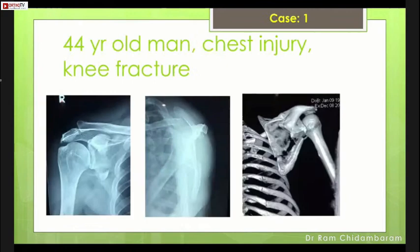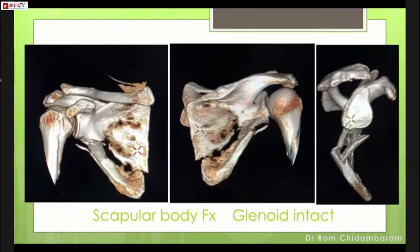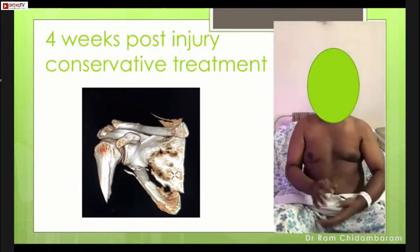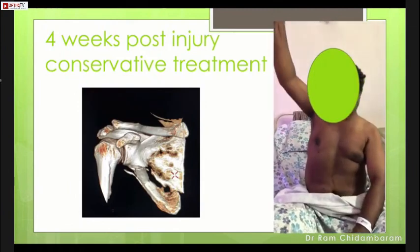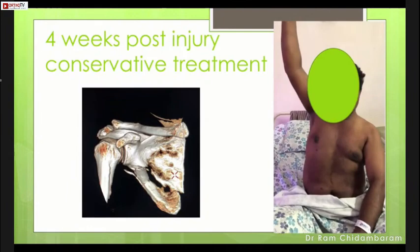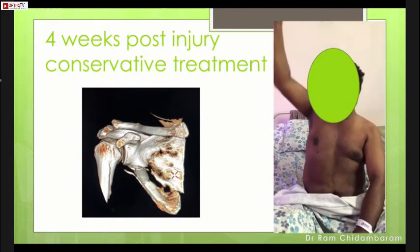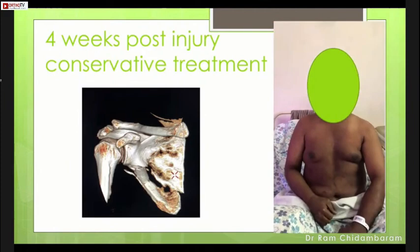A 44-year-old man presented with a chest injury, knee fracture, and shoulder fracture. CT scan showed a scapular body fracture only with the glenoid intact, so I treated this patient conservatively: sling support, ice packs, mobilized as comfort allows, with movement possible as early as four weeks. The key principle is that the scapular muscles sandwiching the bone will mold and heal it — so mobilize early.